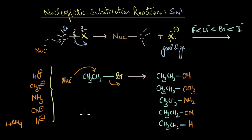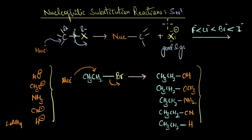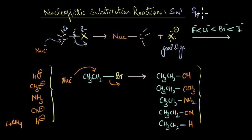As you can see, depending on what the nucleophile is, we can obtain a wide range of products simply by substitution, making nucleophilic substitution reactions an extremely powerful tool in synthetic chemistry. This reaction can proceed via two different mechanisms: SN1 and SN2. Let's begin with the SN1 reaction mechanism.